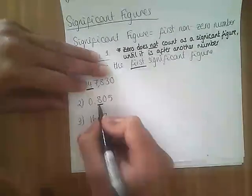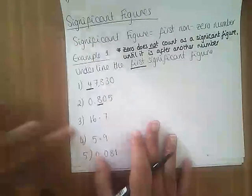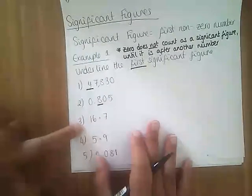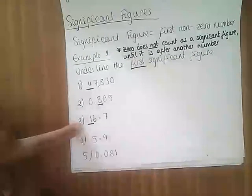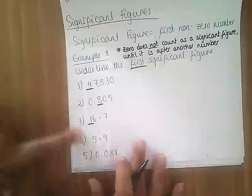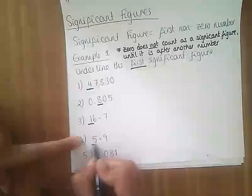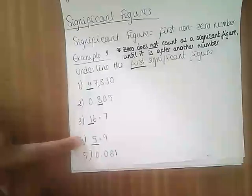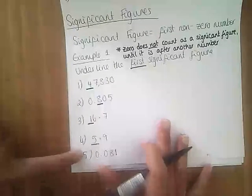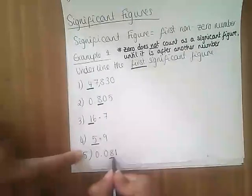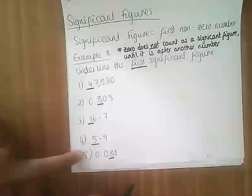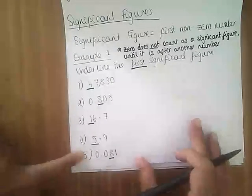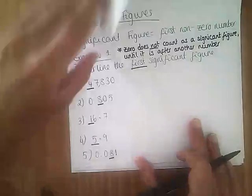So that's our first significant figure. Question three: 16.7 — that one is our first significant figure, representing a 10. In 5.9, the five is our first significant figure. And in this one, our eight is our first significant figure because it is the first number that is not zero.